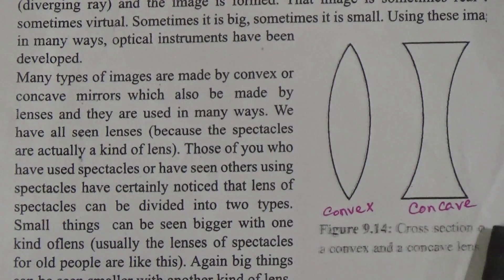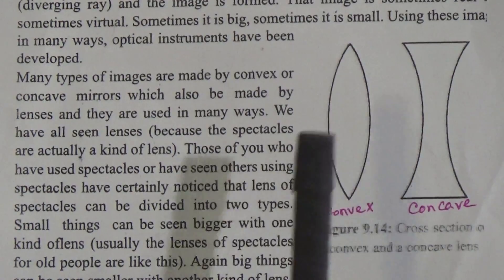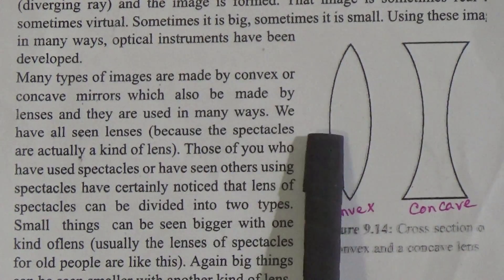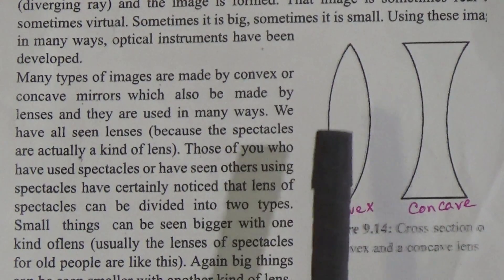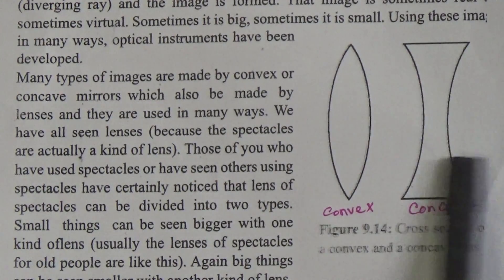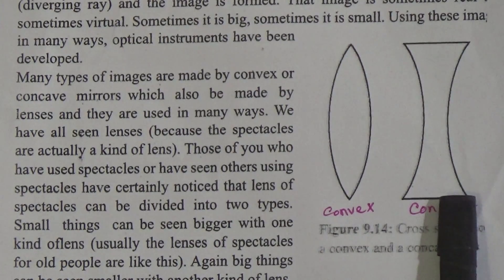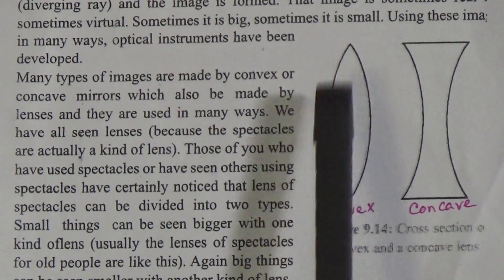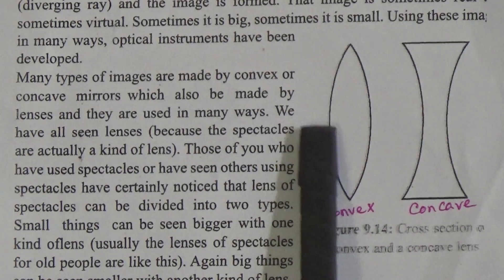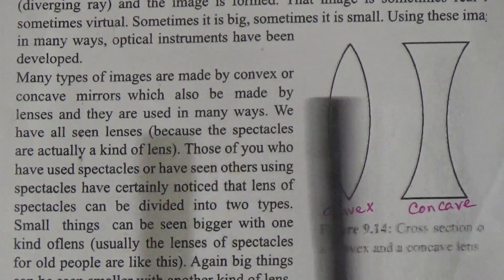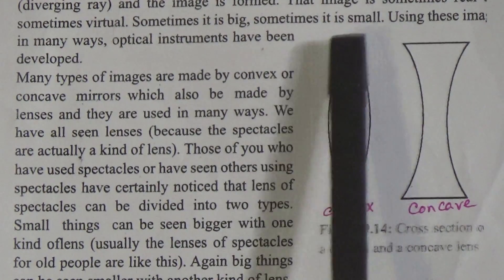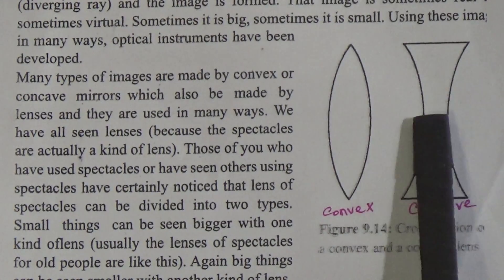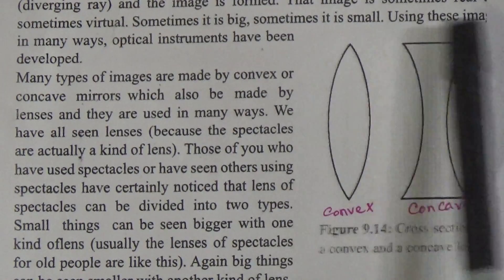What is convex lens and what is concave lens? The lenses with which small things are seen bigger are called convex or converging lens. And the lenses with which big things are seen smaller are called concave or diverging lens. The mid portion of the convex lens is thicker than the edge, and for the concave lens, the mid portion is smaller and the two edges are bigger.